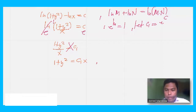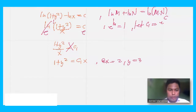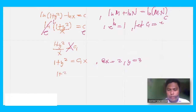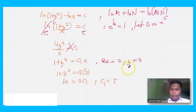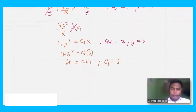Now applying the condition x = 2 and y = 3: 1 + 3² = c1·(2), so 1 + 9 = 2c1, giving 10 = 2c1, therefore c1 = 5.